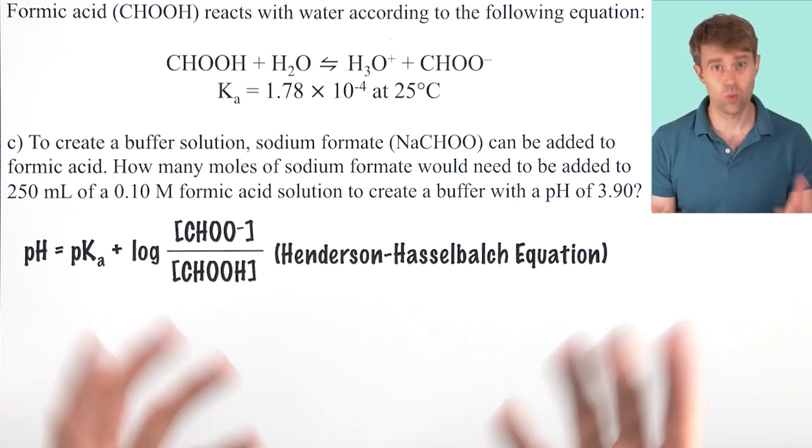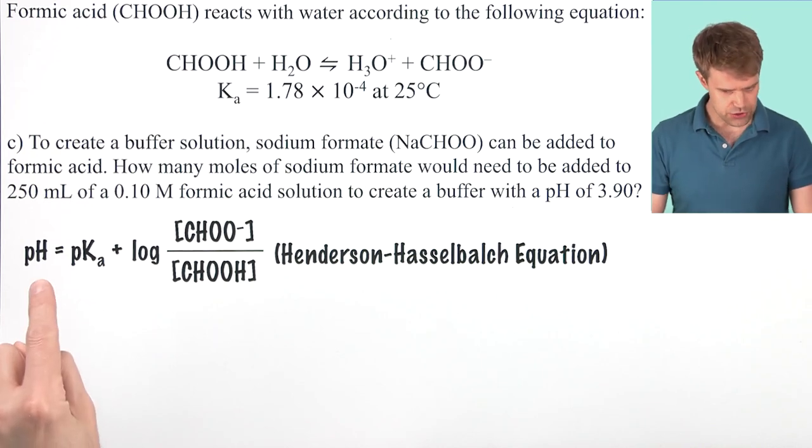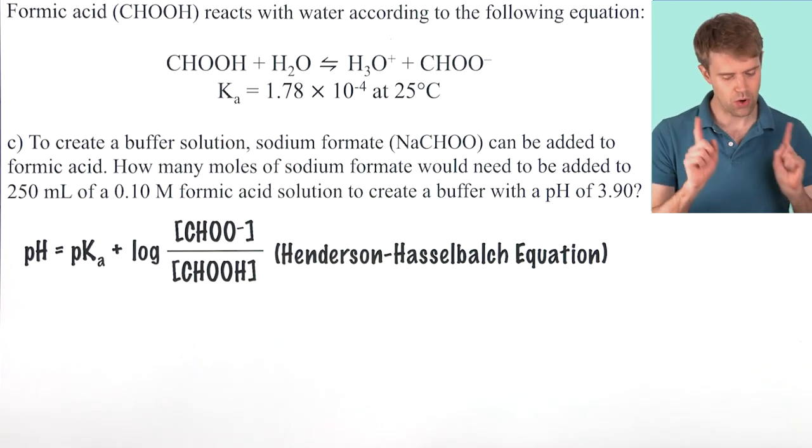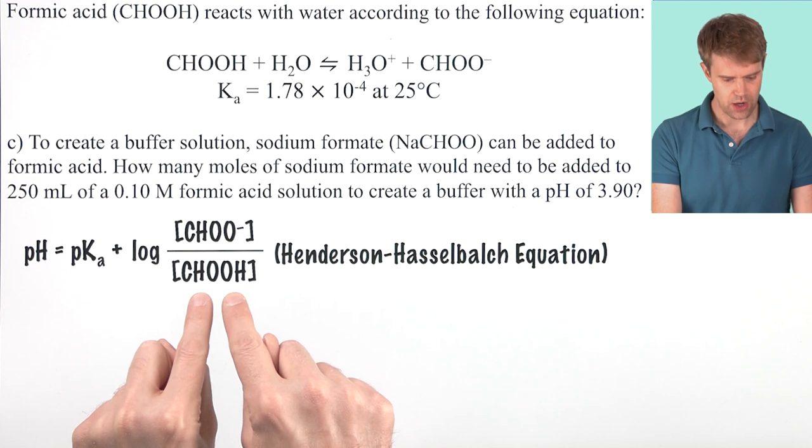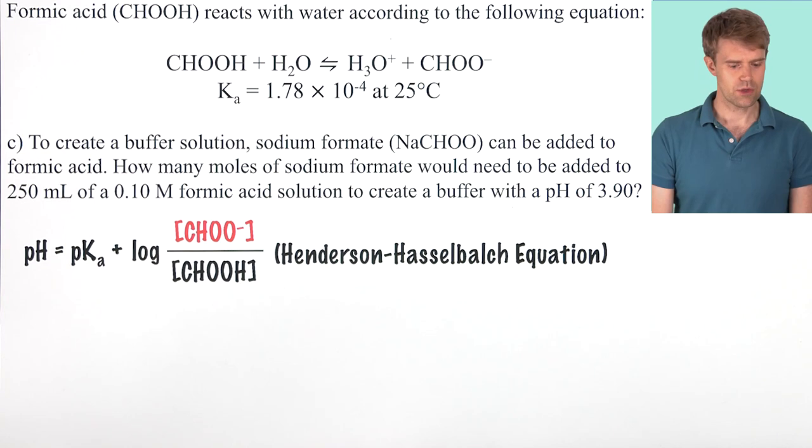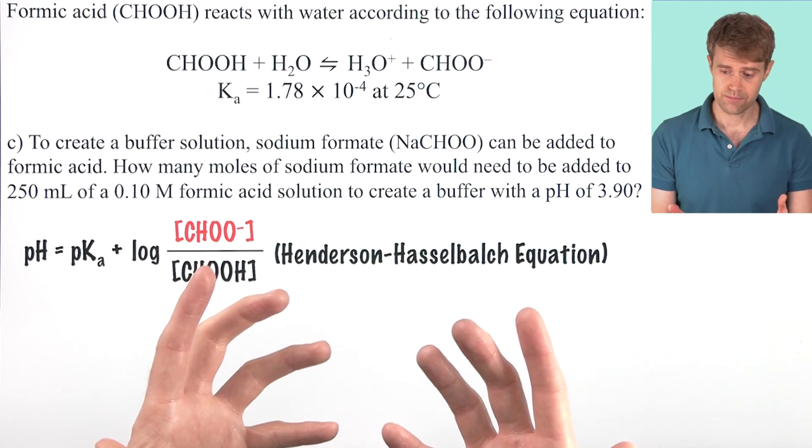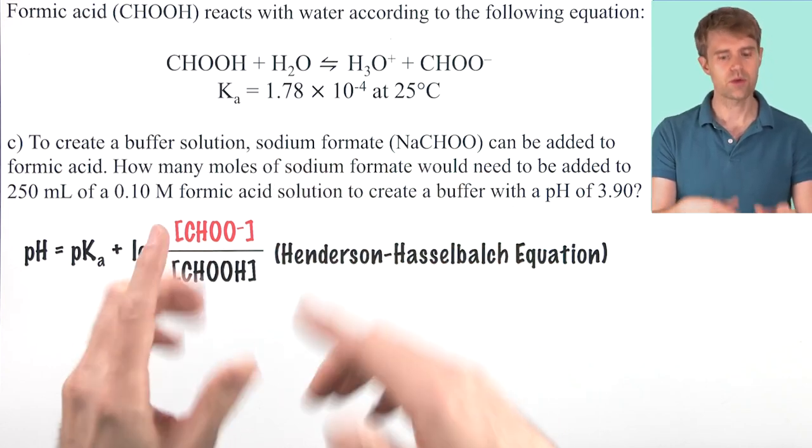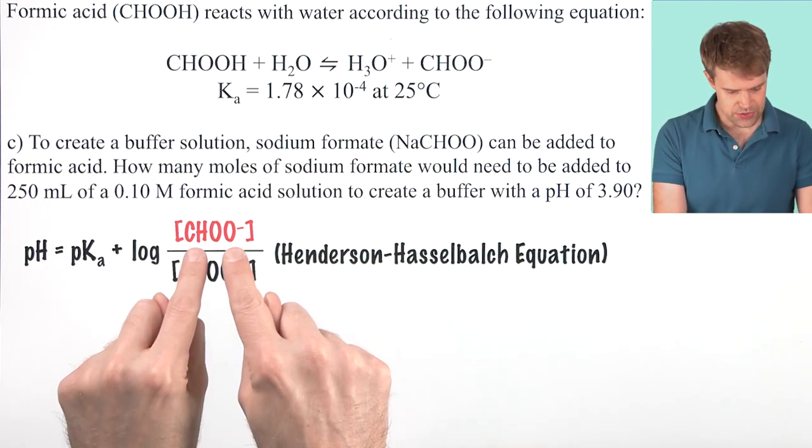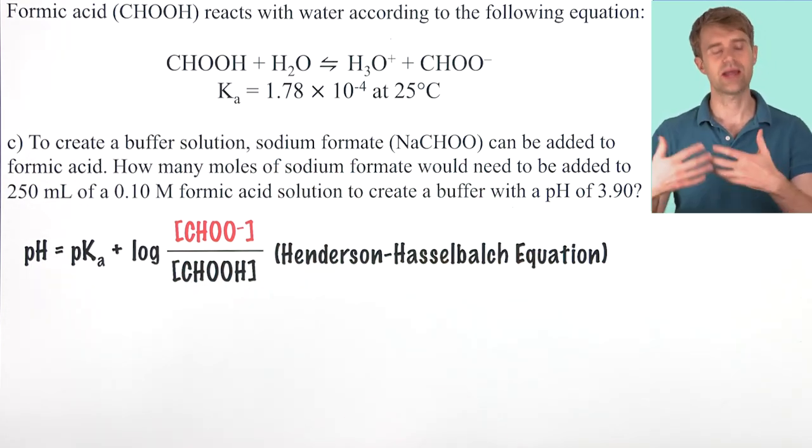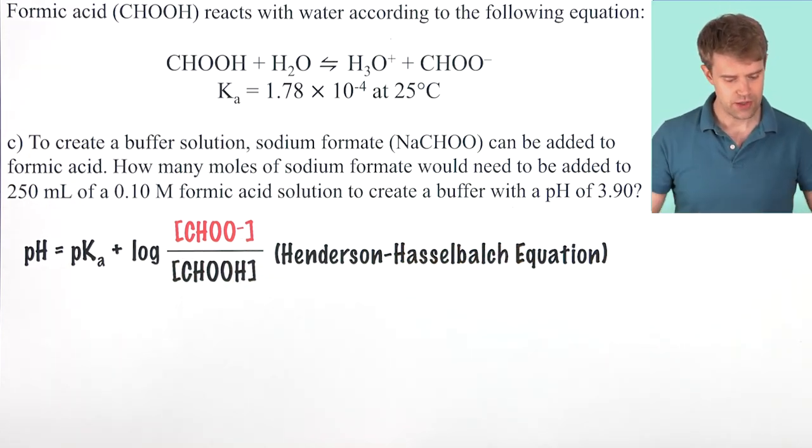Now, what do we know here? What are we going to be solving for? We know the pH, and we can find the pKa from the Ka. And we also know the concentration of formic acid. That's right here. So, the only unknown, then, is the concentration of the formate ion. Essentially, all of this formate ion is going to be coming from the sodium formate that we're adding here. So, once we find this, we can then figure out how many moles of sodium formate we're going to need to add to achieve this concentration.